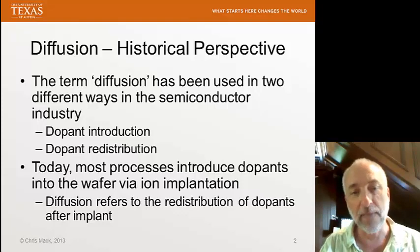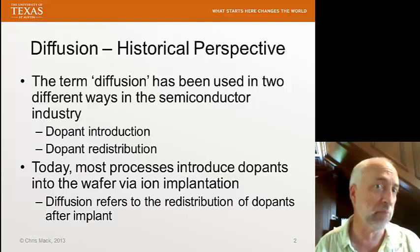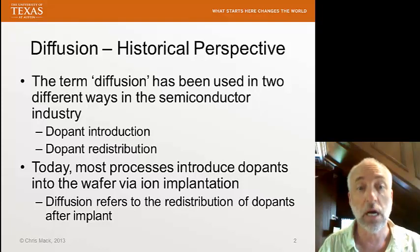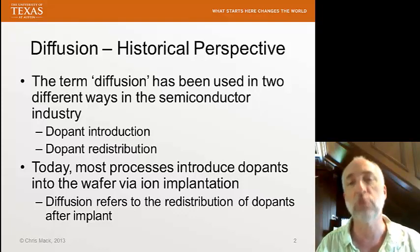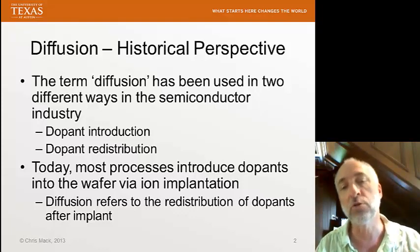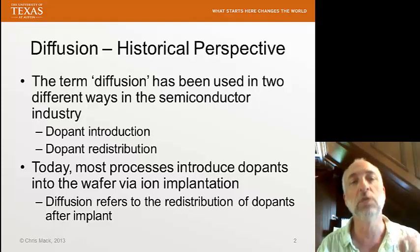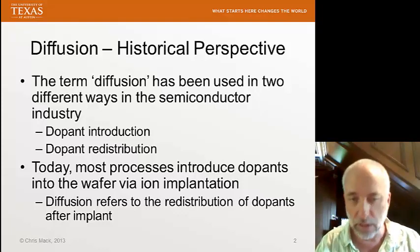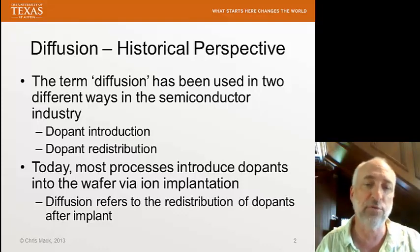However, today most of our processes introduce the dopant in a different step called ion implantation — we'll talk about ion implantation in a separate series of lectures later in the class. In this case, diffusion only refers to the redistribution of the dopants from the initial distribution that comes from ion implantation. So we have to be careful when we use the word diffusion because of these two slightly different meanings, depending on whether we're introducing the dopant during the diffusion step or simply redistributing the dopants after an ion implantation step.